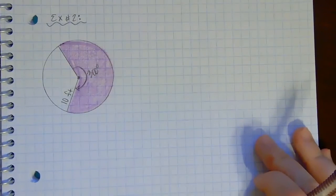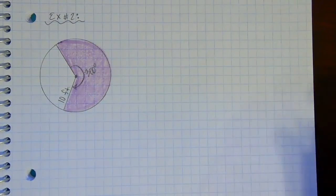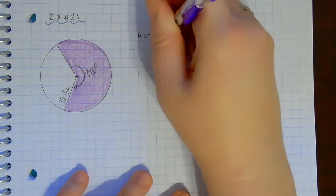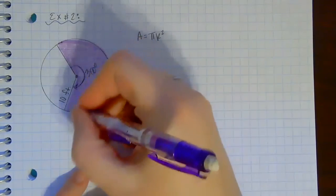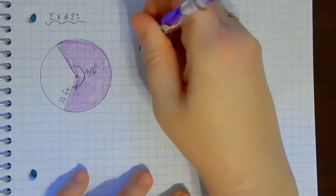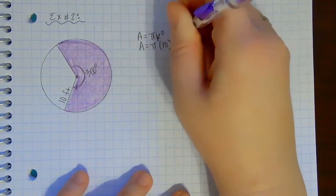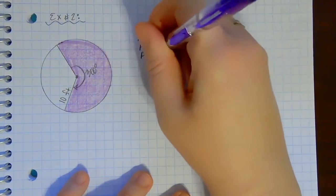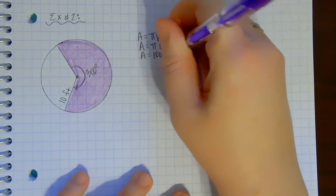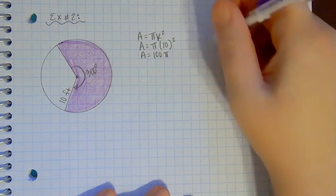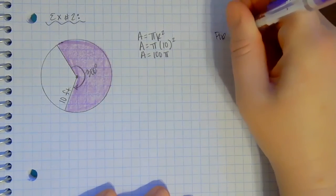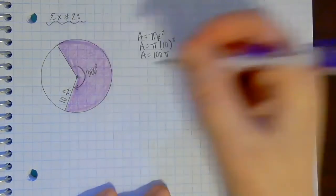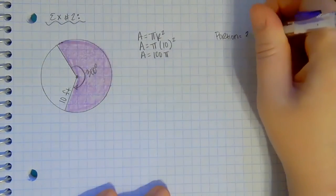Here's another sector to find the area of. I'll start by finding the entire area first: π r², with radius = 10, so π times 10 squared. 10 squared is 100, so the total area is 100π. Then I need to find my portion — how much of the circle I actually have. I have 300 degrees out of a total 360 degrees.